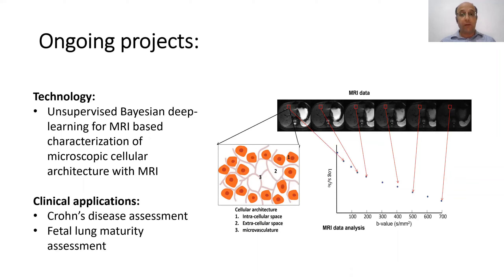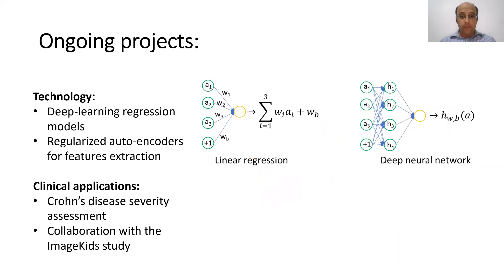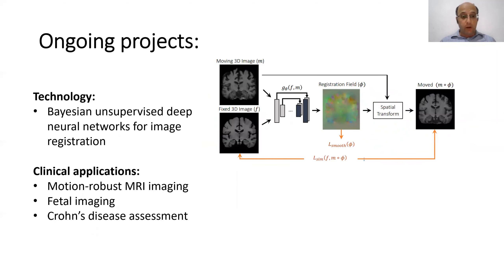We have clinical applications for this novel technology, including assessment of Crohn's disease and assessment of fetal lung maturation. Other projects focus on developing prediction scales to assess disease severity through deep learning regression models and regularized auto-encoders used for feature extraction, with clinical applications in Crohn's disease severity assessment in collaboration with the International ImageKid Study. We also have projects on Bayesian unsupervised deep learning for image registration to enable motion-robust MRI imaging and fetal imaging.